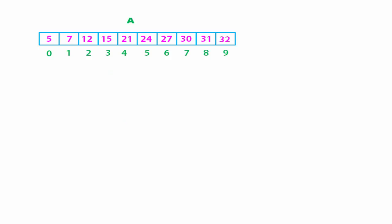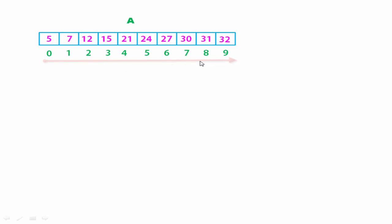Here we take a sorted array named A. Sorted means elements are stored either in increasing order or in decreasing order. Here the elements are stored in increasing order. The array has 10 elements stored at indices 0 to 9. Here we find the element 12 and we call it the item, so item equals 12.